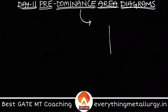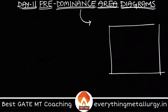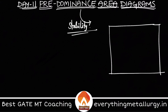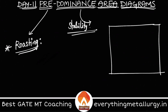A predominance area diagram is a graph which explains the stability of different components present in a system in terms of concentration. We predominantly use these diagrams for roasting.